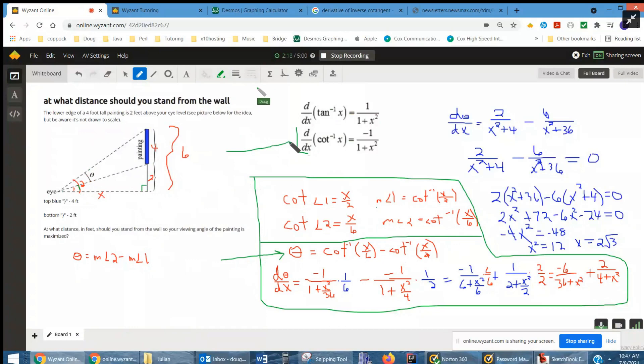So here's the formula for the derivative of arc cotangent, negative 1 over 1 plus x squared. So the derivative of this term right here is negative 1 over 1 plus this thing squared, which is x squared over 36.